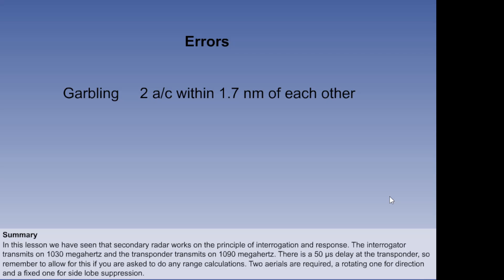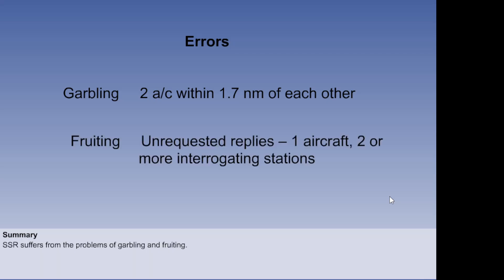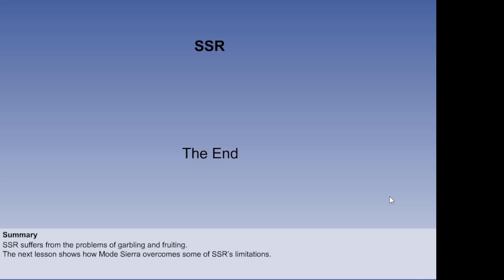One problem associated with SSR is garbling. It occurs if two transponding aircraft are within 1.7 nautical miles of each other. The other is fruiting. This is caused by unrequested replies triggered by a second ground interrogator. This completes the lesson on SSR. The next lesson shows how Mode Sierra overcomes some of these limitations.